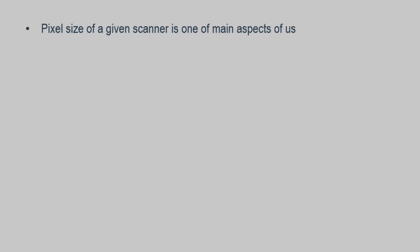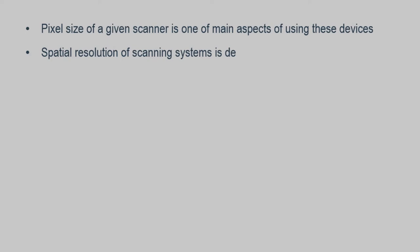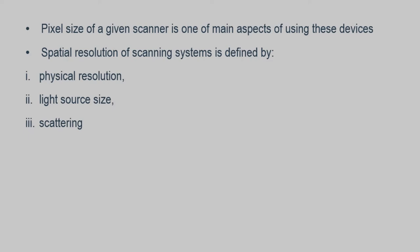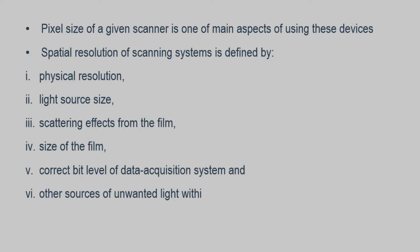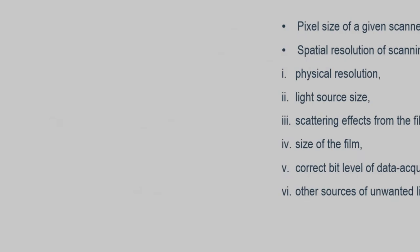The pixel size of a given scanner is one of the main aspects of using these devices. Spatial resolution of a scanning system is defined by: one, physical resolution; two, light source size; three, scattering effects of the film; four, size of the film; five, correct bit level of the data acquisition system; and six, other sources of light within the scanner.